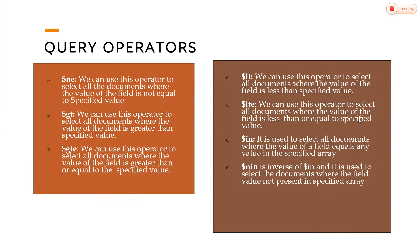So for complex query operators: $ne — we can use this operator to select all the documents where the value of the field is not equal to a specific value. $gt — we can use this operator to select all the documents where the value of the field is greater than the specific value.